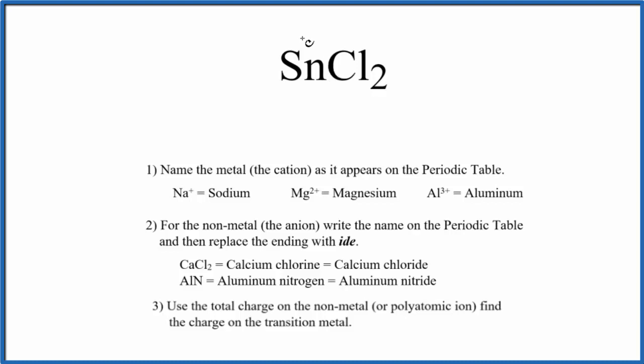First, we write the name for the metal. That's the Sn, which is tin. Then we're going to write the name for the non-metal, chlorine. But we're going to replace the ending for this non-metal here with ide. So at this point, we have the name of tin chloride for SnCl2.